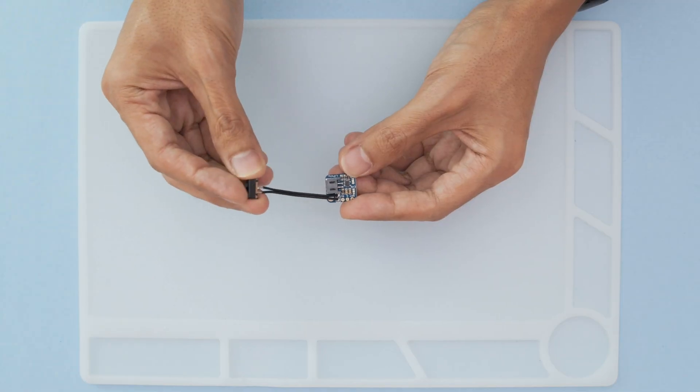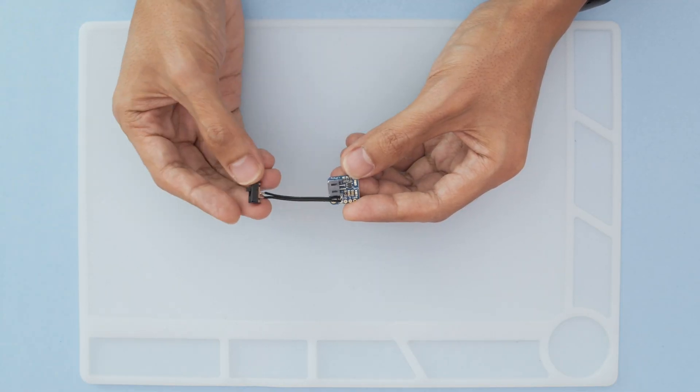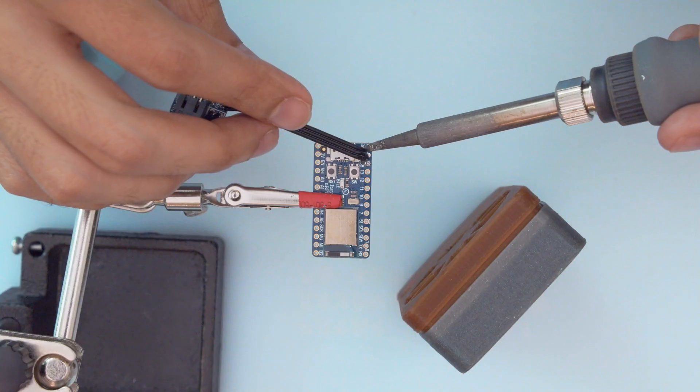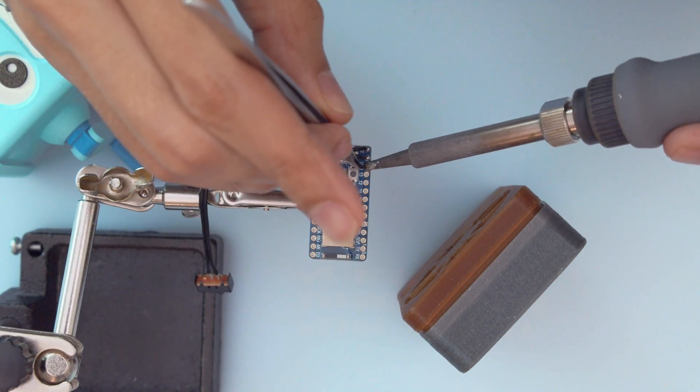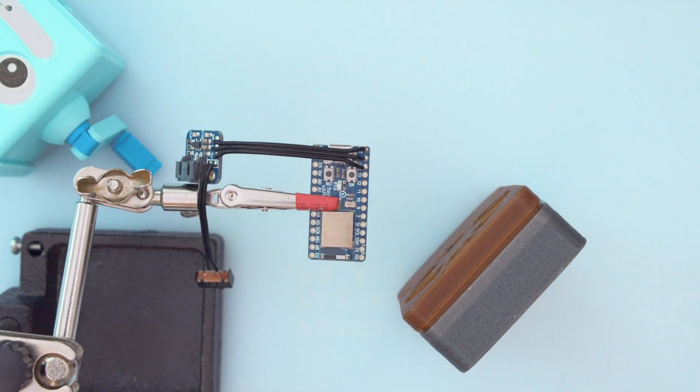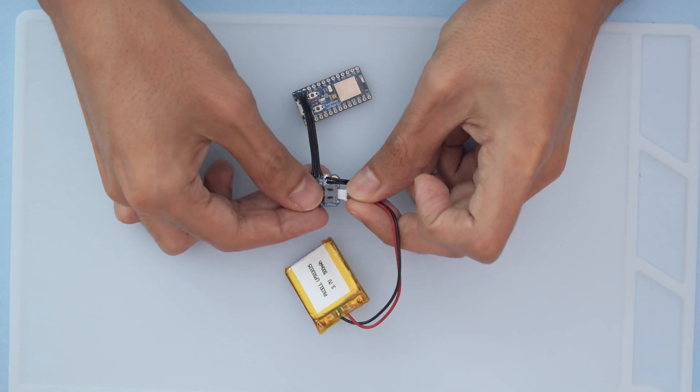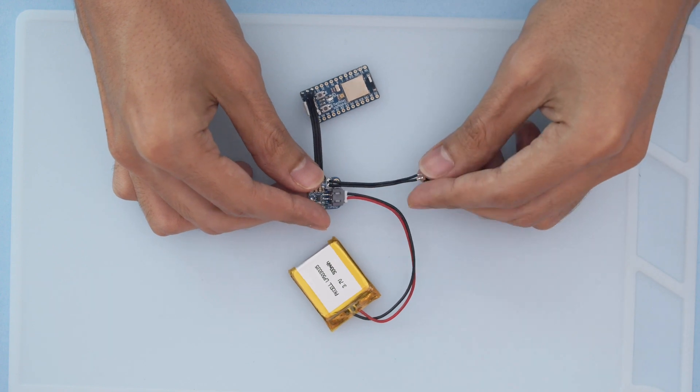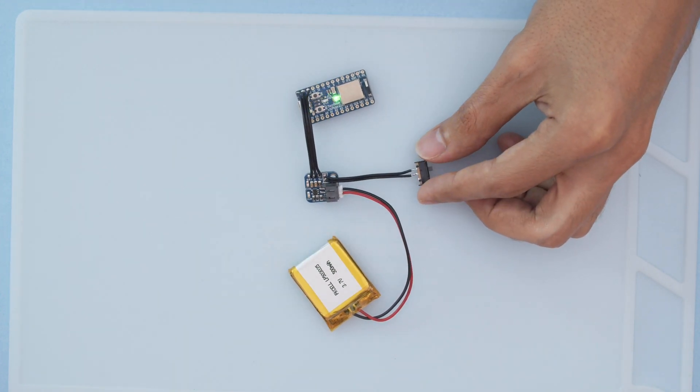I wired up a slide switch to the LiPo backpack so that we could turn the circuit on and off. This is wired to the bat, ground and USB pins on the Itsy Bitsy board. This add-on board lets you recharge a LiPo battery over USB. You can plug in a LiPo directly into the JST port on the side of the board. I made sure to check the wiring and test the switch.